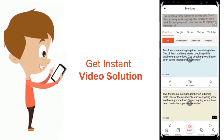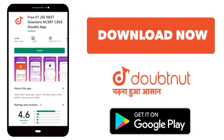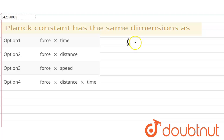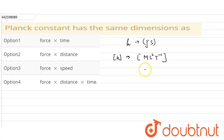Our question is: Planck's constant has the same dimension as — the options are force into time, force into displacement, force into speed, and force into displacement into distance into time. We have to check which option matches the dimension of Planck's constant. The unit of Planck's constant is joules second, so its dimension is ML²T⁻¹.